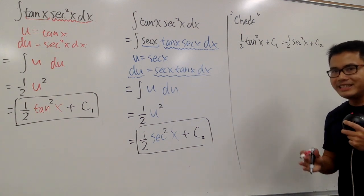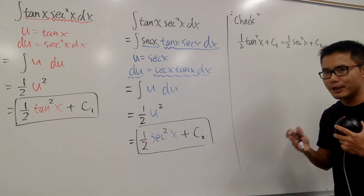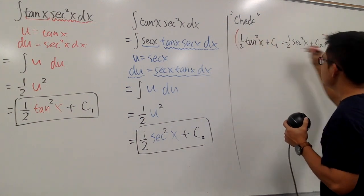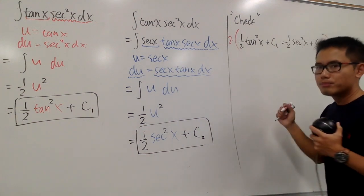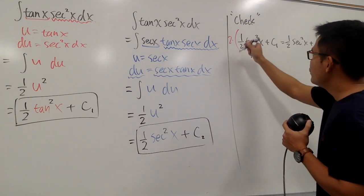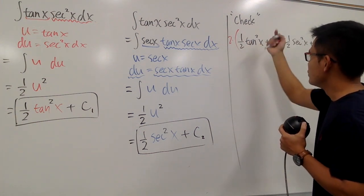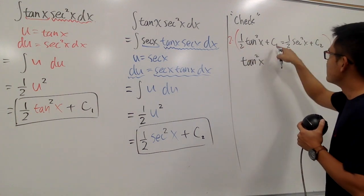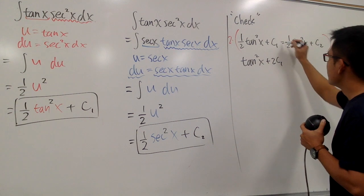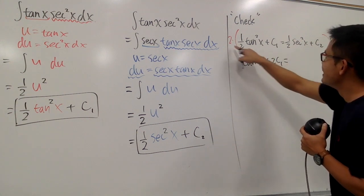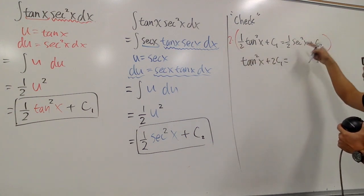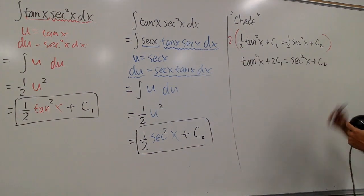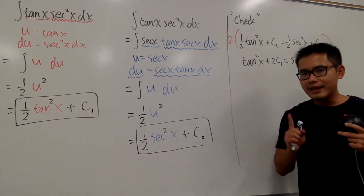And you will see, let me just go ahead and multiply everything by 2 because we don't like fractions. Let's multiply everything by 2. And you will have 1 half times 2, which is just 1. So that's tangent squared x, 2 times c1. Plus 2c1 equals this times that, which is just 1. We have secant squared x, 2 times c2. So plus 2c2 like this.